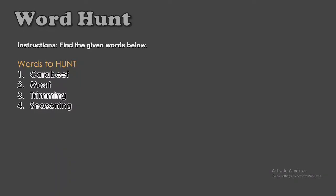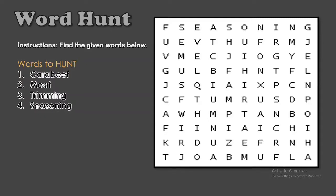Let us play a game to start our lesson — Word Hunt. Instructions: find the given words below. Words to hunt: cara beef, meat, trimming, and seasoning. You will find them in this box of words. I will give you 20 seconds only to hunt the words. All of those words are related to our topic for this video lesson.